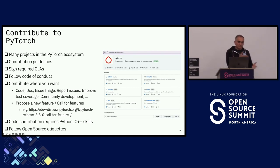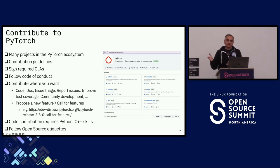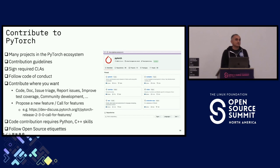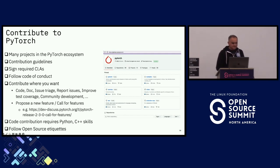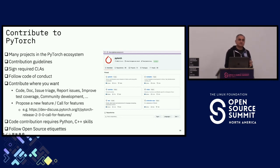For new features, PyTorch has a 'Call for Features' process — similar to a call for proposals at a conference. You submit your feature during the call-for-features window, a committee reviews it and works with you on whether it's a good addition or needs modification. A link to submitted features for the 2.3 release is provided. In terms of skills, Python is good enough to start, though there's a lot of C++ code for tensor operations deeper in the codebase.